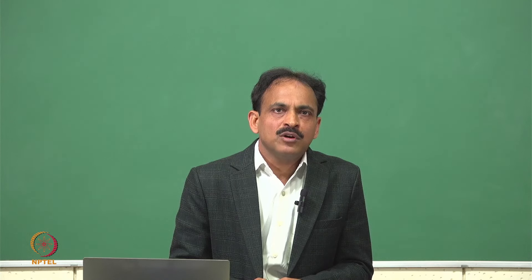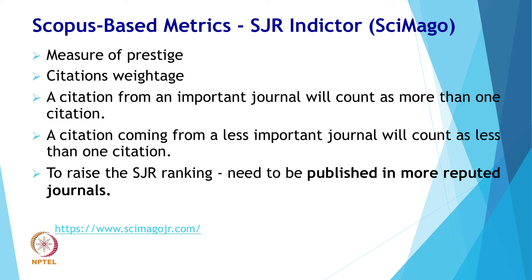SJR — SCImago Journal Ranking — from Elsevier is a prestige metric for journals, book series, and conference proceedings that weights the value of citations based on subject field, quality, and reputation of sources. SJR gives weightage to citations based on where those citations are coming from. Citations from more prestigious journals (with higher SJR) are weighted more than citations from less prestigious journals. The citations from an important journal will count as more than one citation, while a citation from a less important journal will count less than one citation.